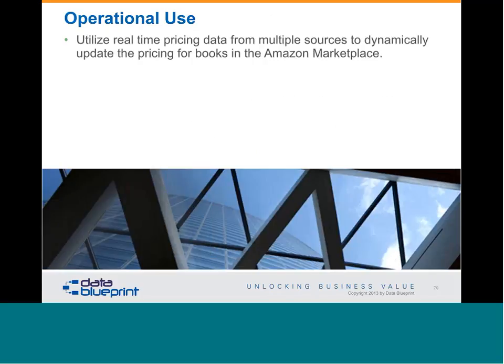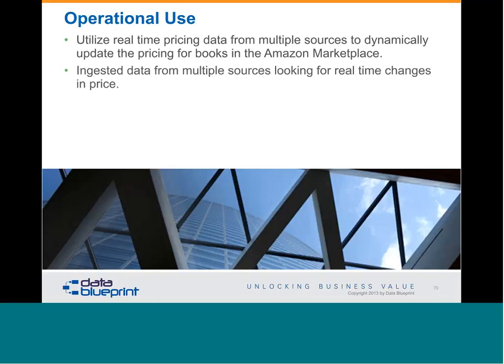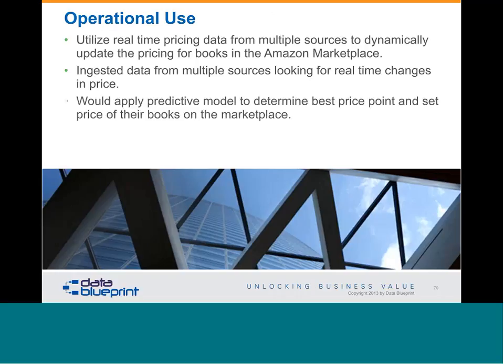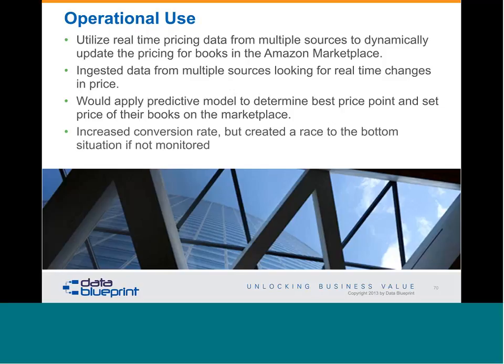A client recently used data fed into their operational activities — they utilized real-time pricing data from multiple sources to dynamically update the price for their books in the Amazon marketplace, ingesting data from eBay, Amazon, and other selling marketplaces and applying a predictive model to determine the best price point. However, caution: if you let the computer run wild and update your operational activities, you can have a race to the bottom where book prices might become one cent. You have to think about how you apply that big data technology and adjust algorithms, models, and frameworks accordingly.